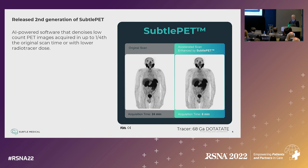SubtlePET is our other FDA-cleared and CE-marked product. It is also in its second generation and is AI-powered software that can denoise low-count PET images. It's very flexible: you can reduce the scan time by a factor of about four, or reduce the dose, or reduce both dose and time by a factor of two each.